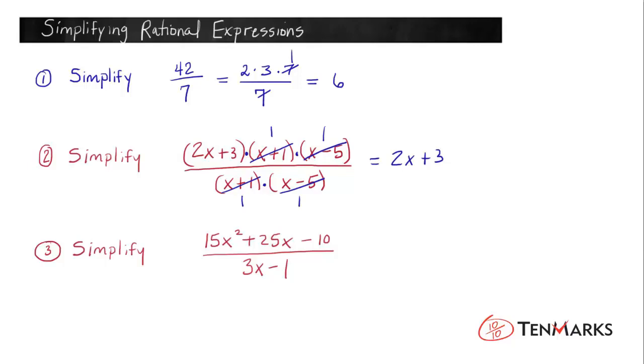Let's take a look at problem number 3. 15x squared plus 25x minus 10 divided by 3x minus 1. Definitely a rational expression. It has a polynomial in the numerator and a polynomial in the denominator. What I want you to notice here is we could use synthetic division or long division to divide 3x minus 1 into the numerator.